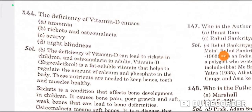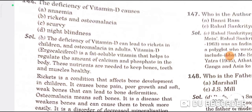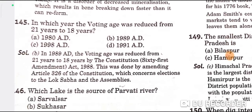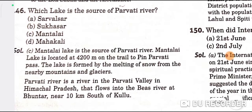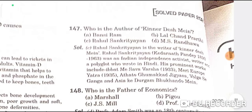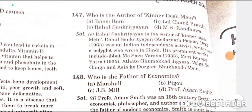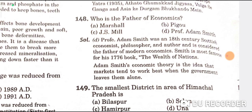The deficiency of vitamin D causes rickets and osteomalacia — B is the correct option. The voting age was reduced from 21 years to 18 years in 1989 by the 61st Amendment — that year is the correct option. The source of the Parvati river is Mantalai Lake — C is the correct option. The author of Kinardesh is Rahul Sankrityayan — C is the correct option. The father of economics is Adam Smith — D is the correct option.